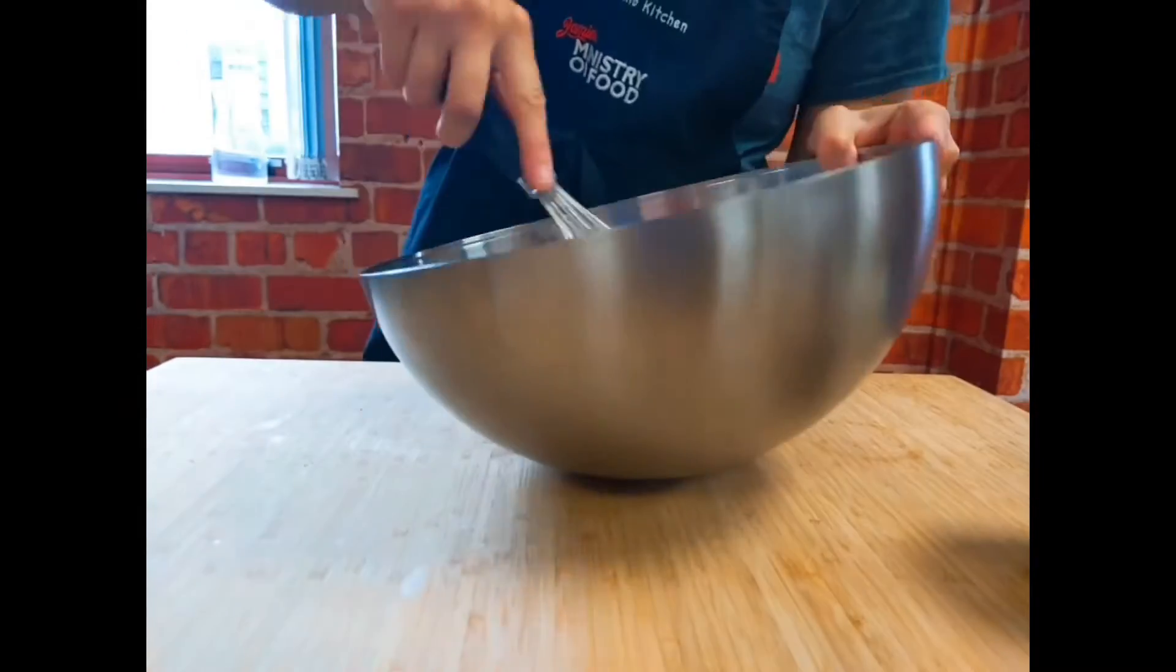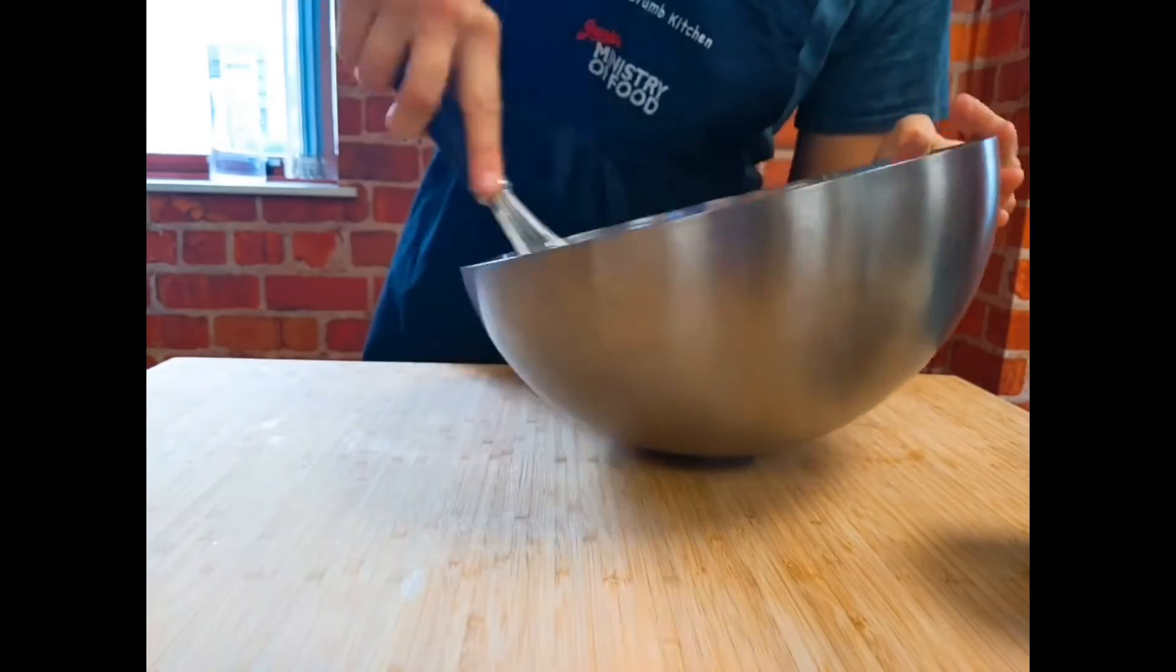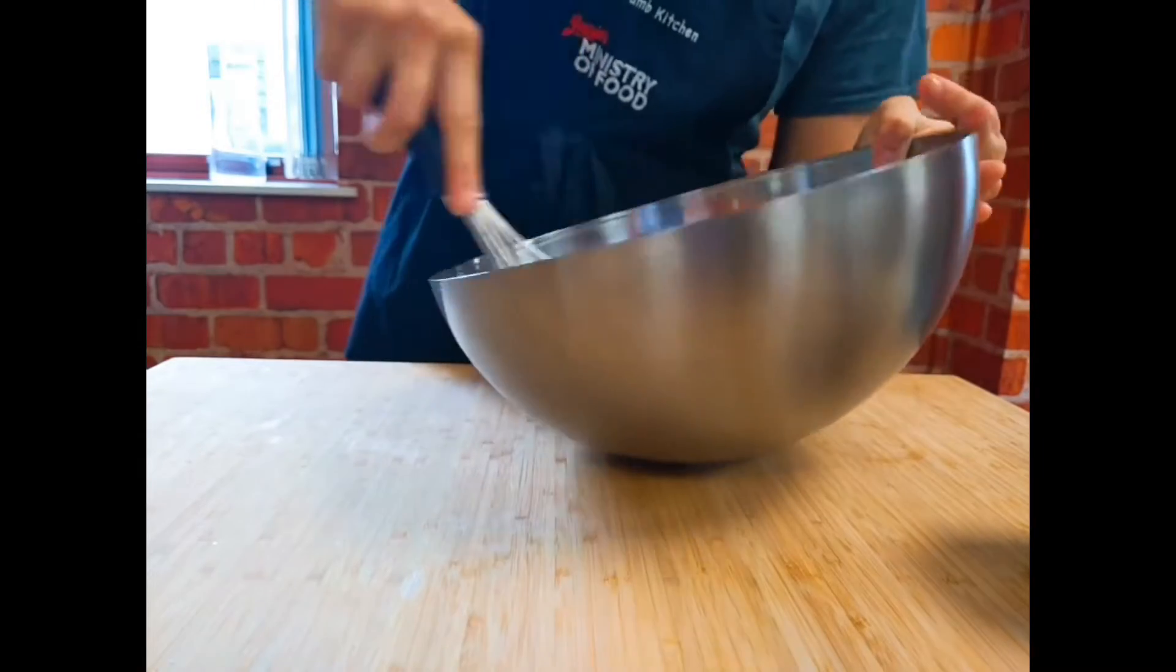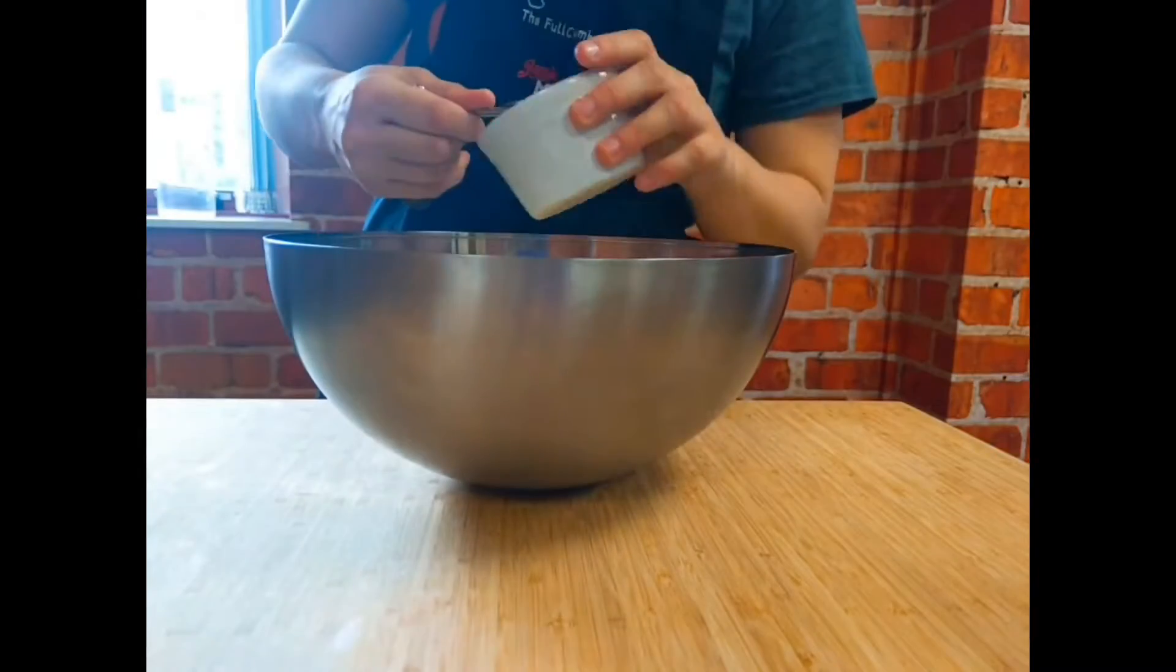In a separate bowl, whisk the double cream until you get soft peaks, and then fold in your icing sugar.